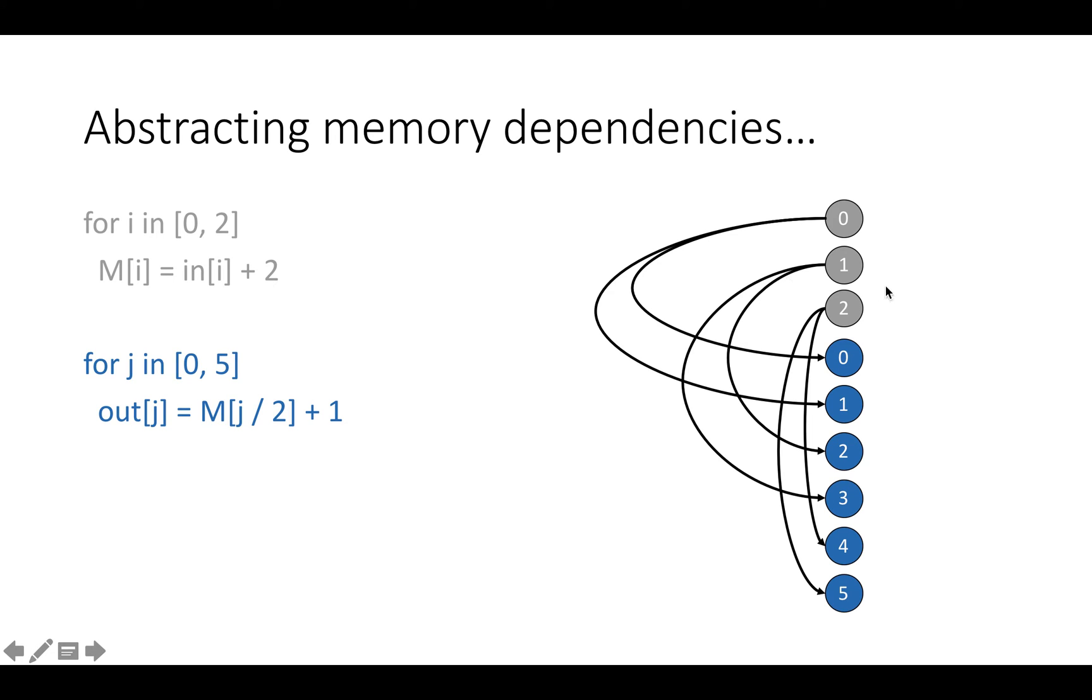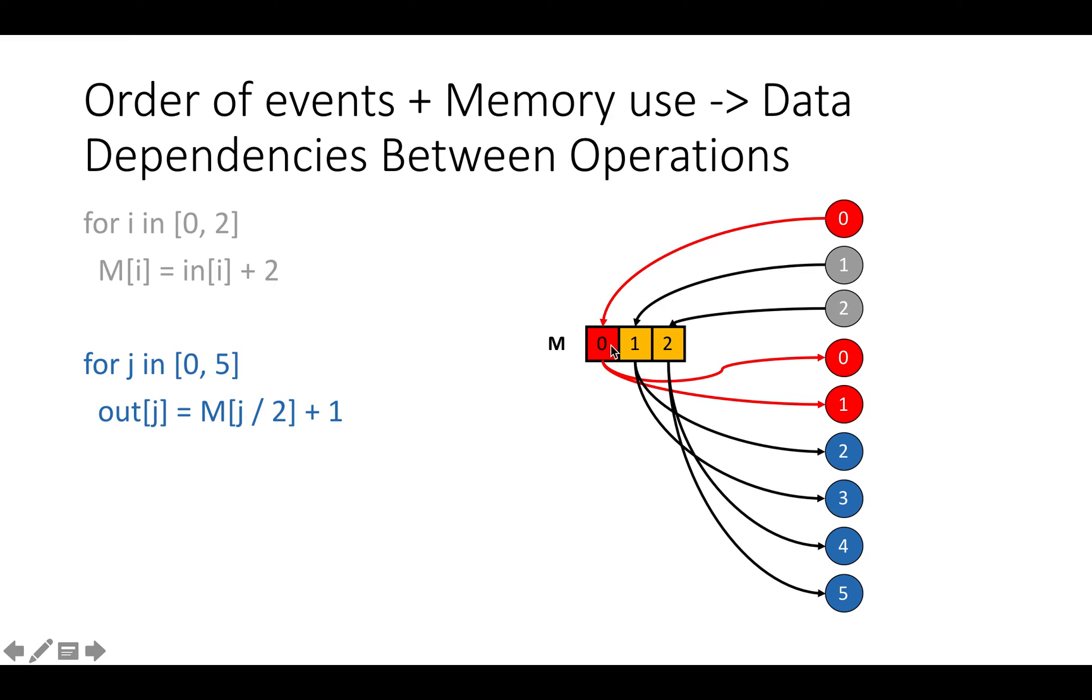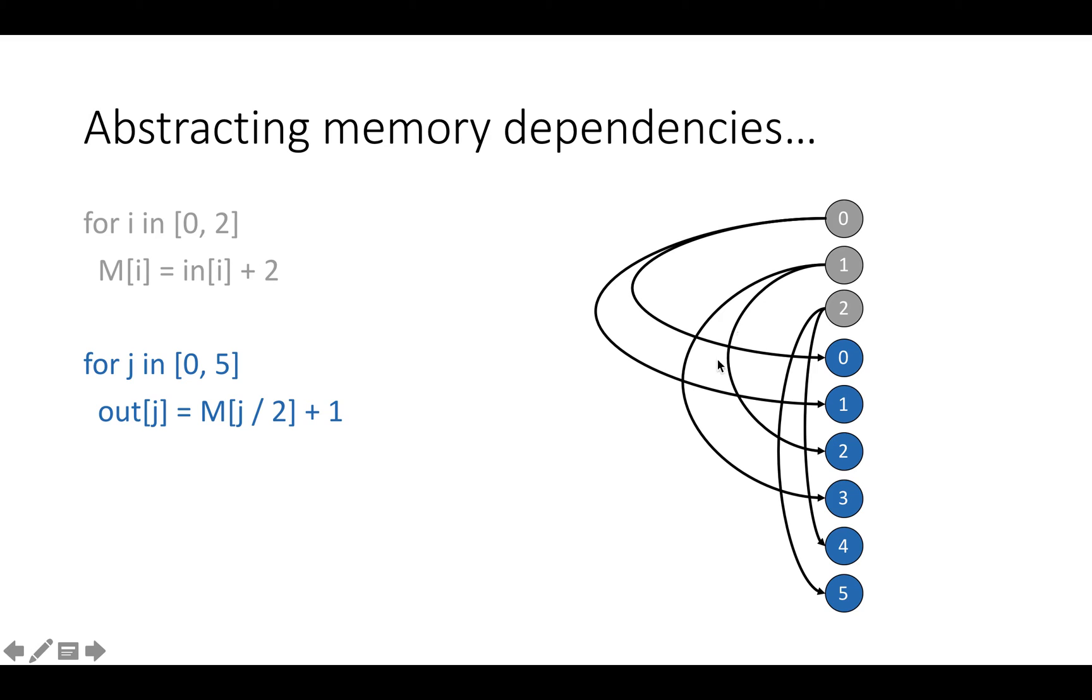So actually we can abstract away these memory dependencies and just draw an arrow for every memory flow that we saw on the previous page. For example, loop zero sends data to M[0] which sends data to zero and one, so we can draw an arrow from zero to zero and zero to one. Producer iteration one writes to memory location one, memory location one is read by consumer iterations two and three, so we draw arrows from one to two and one to three, and so on. And now that we've abstracted away these memory dependencies as arrows, we can see that we could actually reorder these operations in any way that keeps all of the arrows pointing forward.